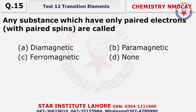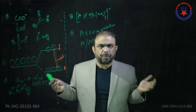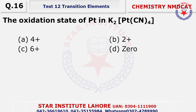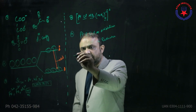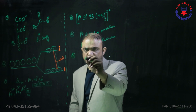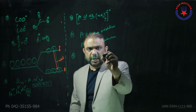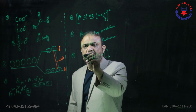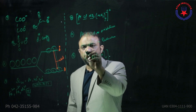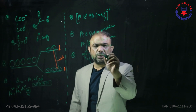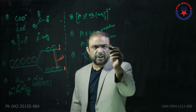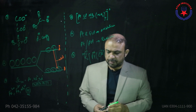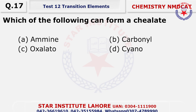Question number fifteen: any substance having only paired electrons with paired spin — if everything is paired and it repels, it is called diamagnetic. Question number sixteen: first write the complex for question 16 — the complex is K2[Pt(CN)4]. We need to find the platinum oxidation state. If one potassium is +1, then two potassium gives +2 total, and the complex ion has a minus 2 charge. One cyanide is minus 1, so four cyanide gives minus 4; the answer is plus 2 — choice beta.